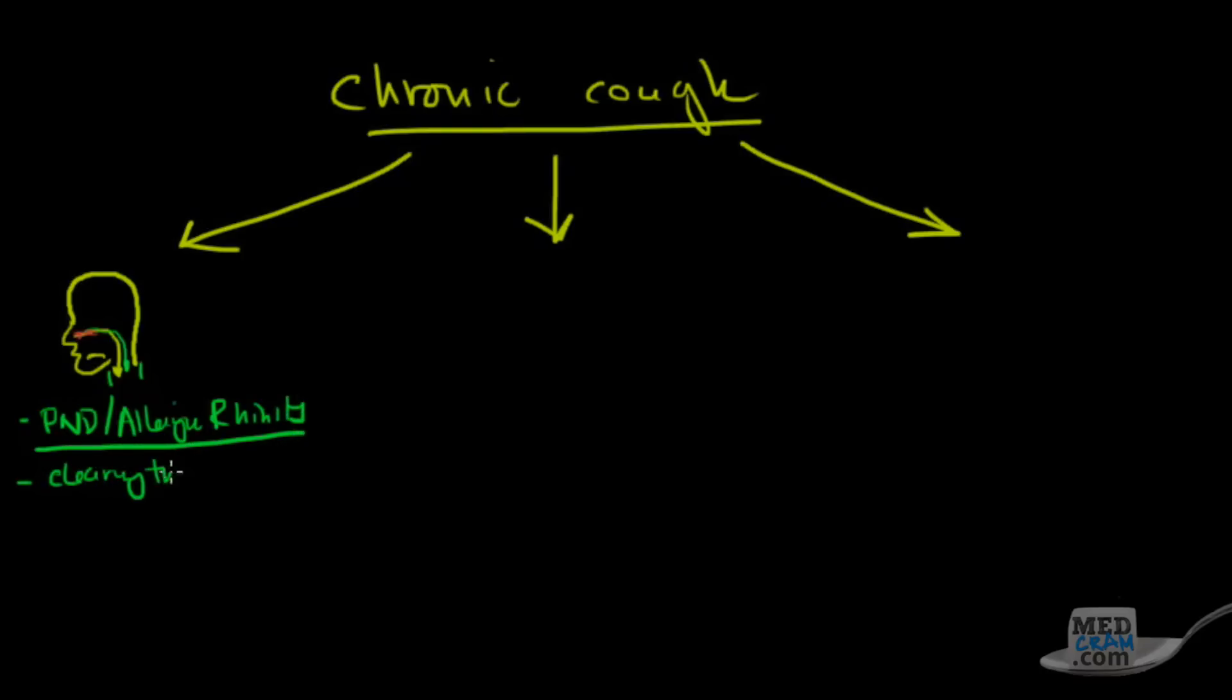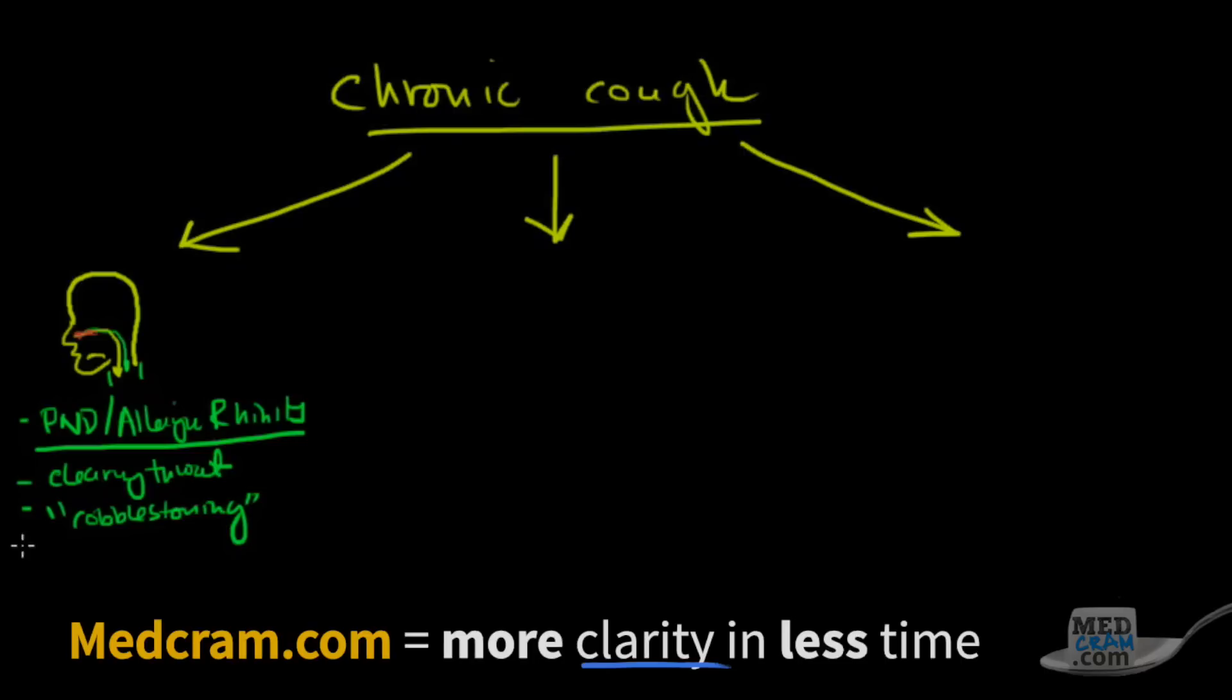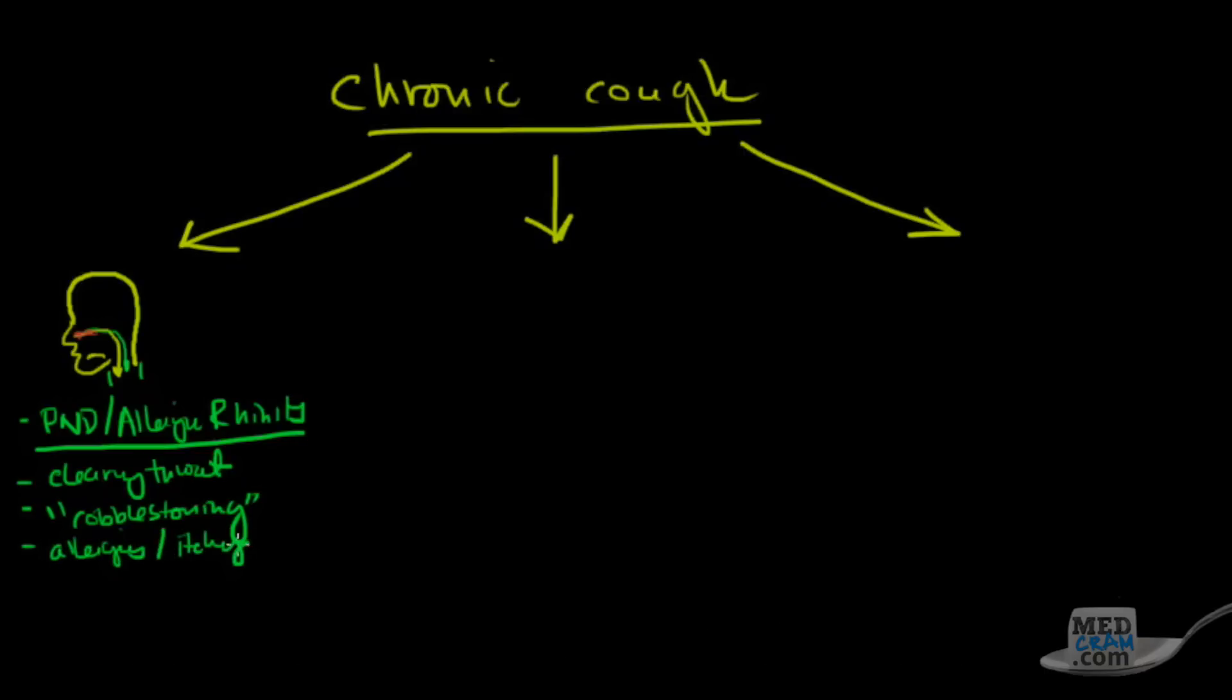So what are the symptoms of that? Clearing your throat a lot. If you look in the back of the throat, you see this thing called cobblestoning. You've got itchy eyes or allergies. So think about all those things in terms of post-nasal drip or allergic rhinitis. And I would say out of all the people who have a chronic cough or what we've eliminated, this accounts for about 9% of that.